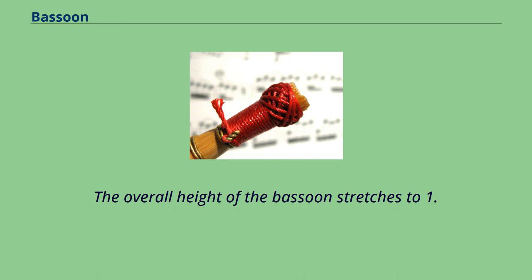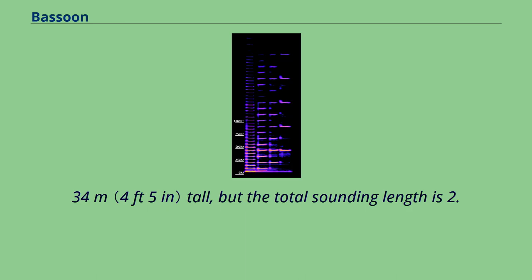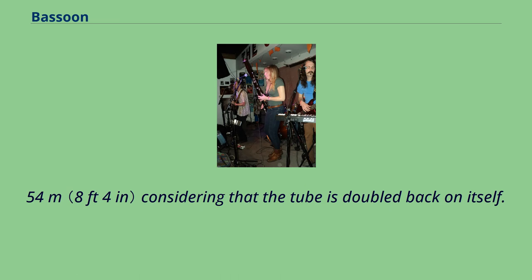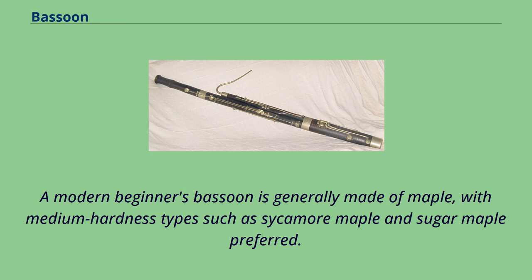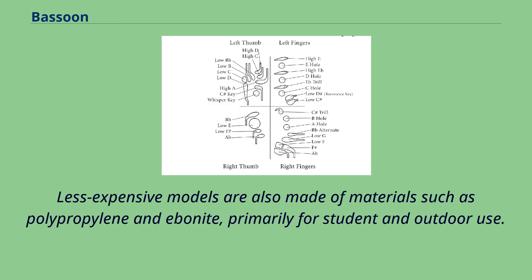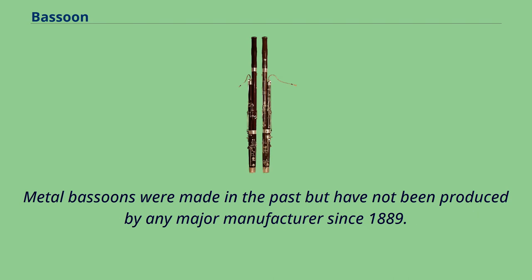The overall height of the bassoon stretches to 1.34 meters tall, but the total sounding length is 2.54 meters considering that the tube is doubled back on itself. There are also short-reach bassoons made for the benefit of young or petite players. A modern beginner's bassoon is generally made of maple, with medium hardness types such as sycamore maple and sugar maple preferred. Less expensive models are also made of materials such as polypropylene and ebonite, primarily for student and outdoor use. Metal bassoons were made in the past but have not been produced by any major manufacturer since 1889.